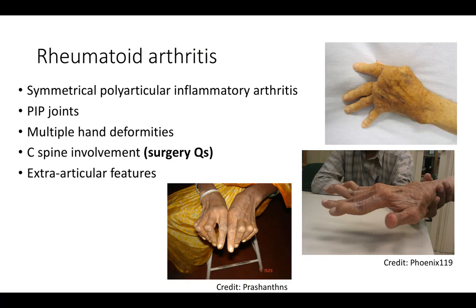Rheumatoid arthritis is a symmetrical polyarticular inflammatory arthritis affecting PIP joints rather than DIP joints. Key hand deformities include: ulnar deviation, swan neck deformity - extension of the proximal interphalangeal joint and flexion of the distal interphalangeal joint - and boutonniére deformity, which is the reverse: flexion of the proximal interphalangeal joint and extension of the distal interphalangeal joint.